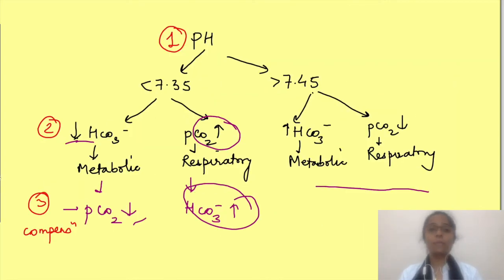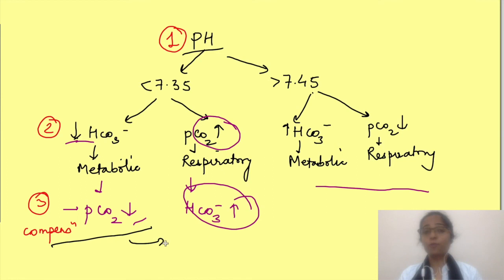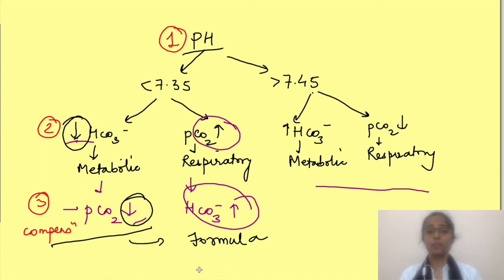The take-home messages: to identify acid-base disorders, first look at pH, then look at the values of pCO2 and bicarbonate. To identify the metabolic or respiratory cause, the corresponding values of the remaining variable demonstrate compensation, the amount of which is determined by the formula. The direction of compensation is in the same direction as the primary change. If your observations do not match this three-step approach, it indicates a mixed acid-base disturbance.